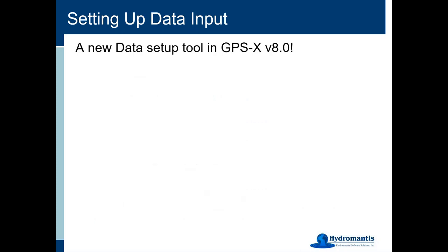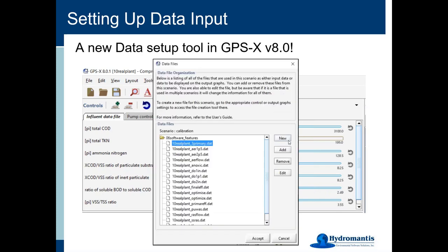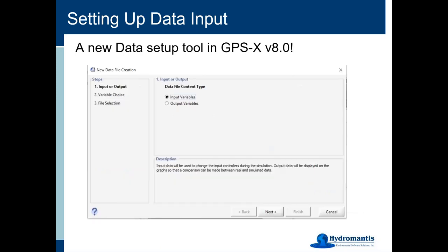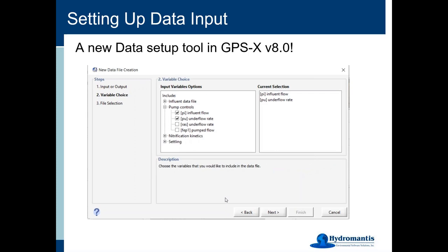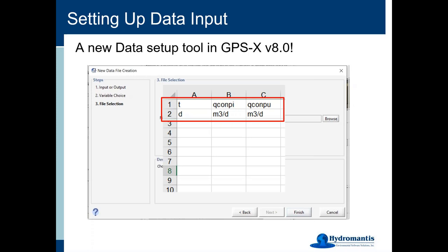The new thing I wanted to highlight is called the new data setup tool. It's that same data files button. If you're creating a data sheet for the first time for a particular parameter — say, total TKN — just click on data files and then click the new button. You get a setup wizard, similar to the ones used for SRT or the define menu. It will ask you whether this is an input variable or an output variable, and then you select which one you want to use. You select from the variables you have already dragged up onto the various windows in your input control area, then specify a file name.